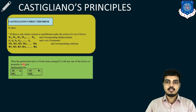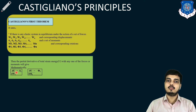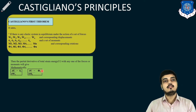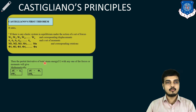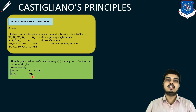So the partial derivative of the total strain energy of the body, if you take the partial derivative with respect to any one of the forces or moments, like mathematically it will give del U by del W1 equal to delta 1 — where delta 1 is deflection and W1 is the force load. And if you do del U by del M1, it will give phi. So the partial derivative of total strain energy with respect to any force gives deflection, and with respect to any moment gives rotation.